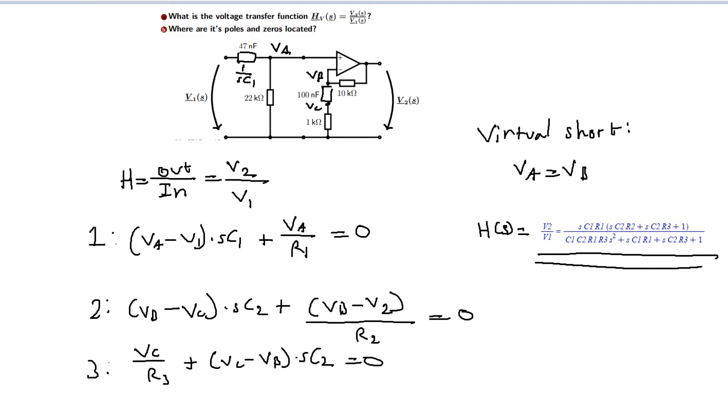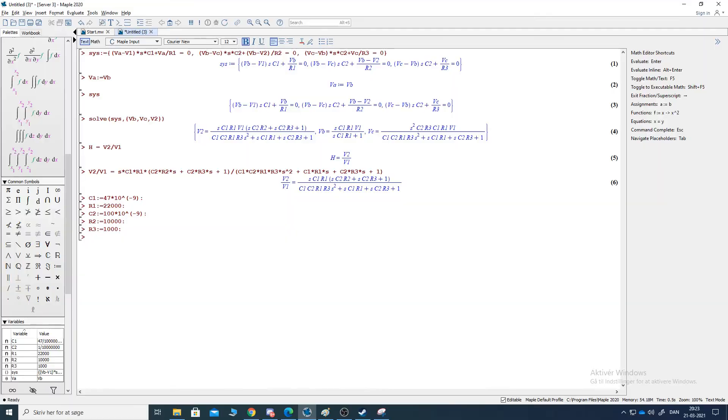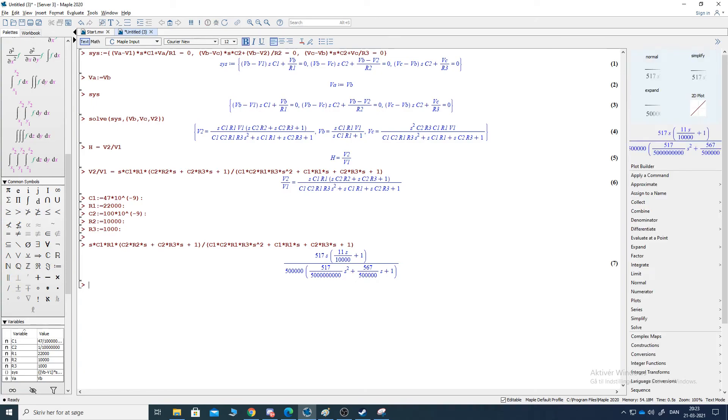But we're also asked to locate the transfer function poles and zeros. To do that, we have to use the component values. So I will just plug in the component values in Maple and meet you back in there. So now I've plugged in the values. Now let's update the transfer function. And we get this.